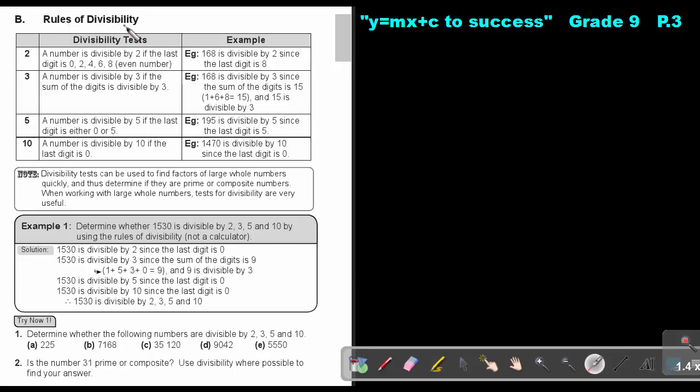Let's just revise the rules of divisibility. How do I know if a number can divide by 2? A number is divisible by 2 if the last digit is 0, 2, 4, 6, an even number. For example, the last digit is 8, so it's divisible by 2. What about divisibility by 3? A number is divisible by 3 if the sum of the digits is divisible by 3. Meaning, you will say 1 plus 6 plus 8, so that's 7 plus 8, that's 15. And 15 is divisible by 3, therefore 168 will also be divisible by 3.